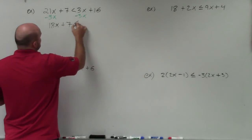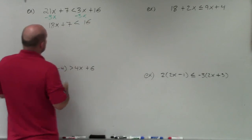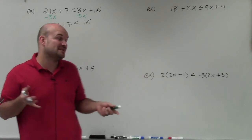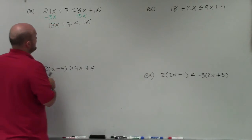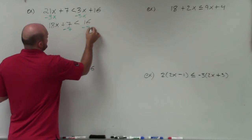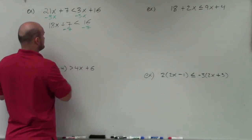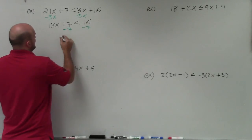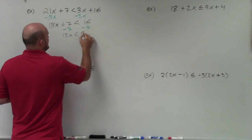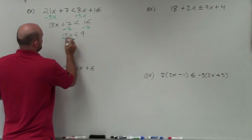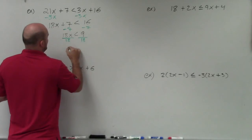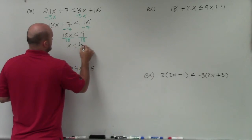Therefore I will not have to flip any signs. By getting the variables on the same side — I'll subtract 3x on both sides — I now have a two-step equation, and I can use my inverse operations. So here I will subtract 7 on both sides. Therefore I have 18x is less than 9. Then I will divide by 18, and I have x is less than 1 half.